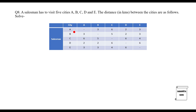It is a balanced problem. There are certain restrictions: the salesman cannot go from his own city to the same city, so A to A — no allocation, B to B — no allocation, and similarly up to E to E. The values in these cells are distances in kilometers. We need to figure out the shortest distance the traveling salesman has to cover. The salesman will start from a particular city, go through the other cities, and finally return to his own city.